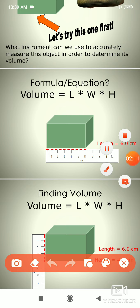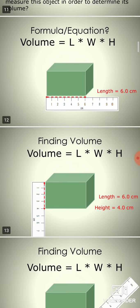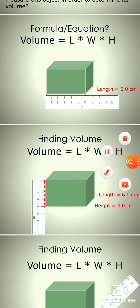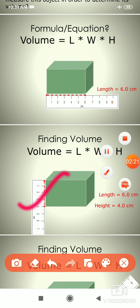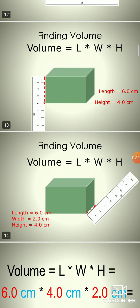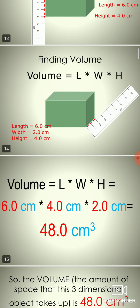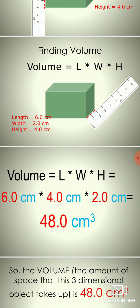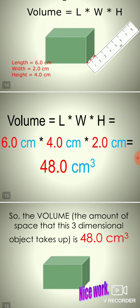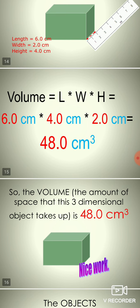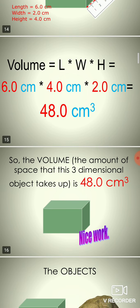This is a regular shape in which we can measure length, height, and breadth. This shape is a cuboidal shape. The volume of a cuboid is length × breadth × height. With length = 6, breadth = 2, and height = 4, we get volume = 48 cm³.